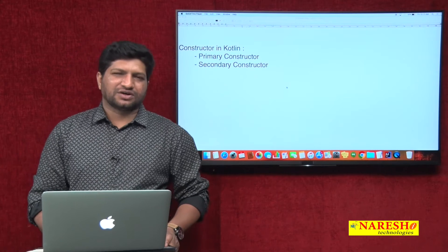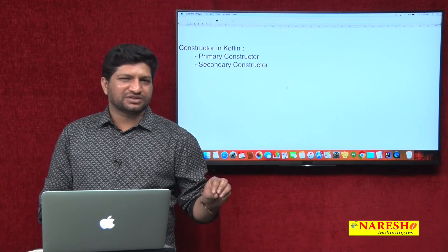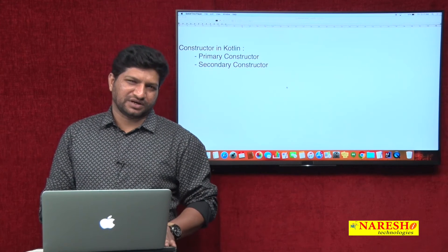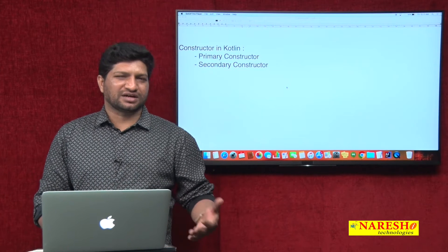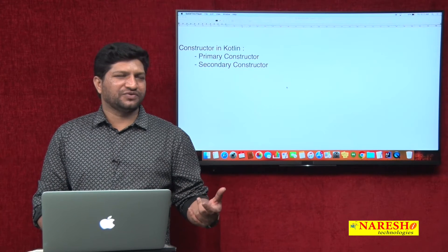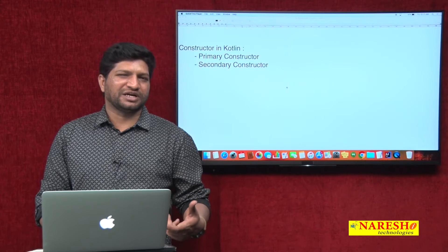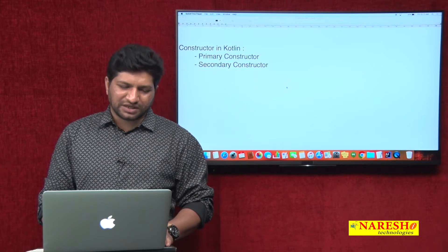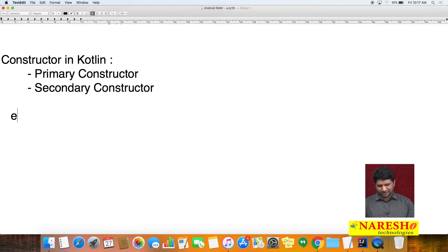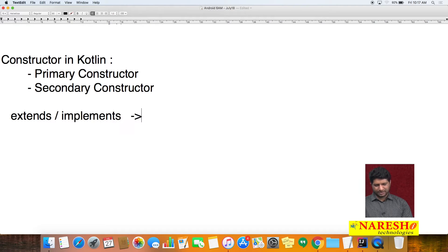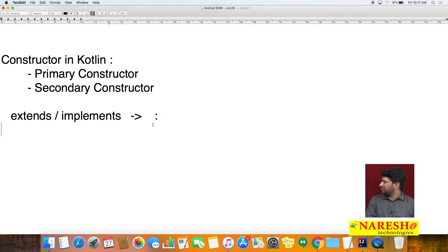In Java, we have the keywords 'extends' and 'implements'. The extends keyword is used to inherit a class, and the implements keyword is used to provide an implementation for an interface. But in Kotlin, we do not have extends or implements keywords. Instead, we simply use the colon symbol.